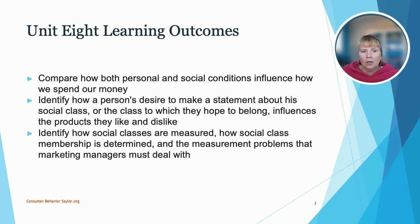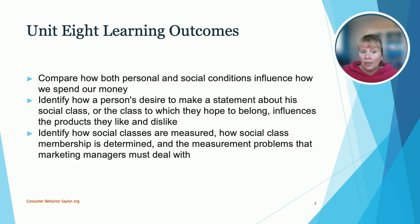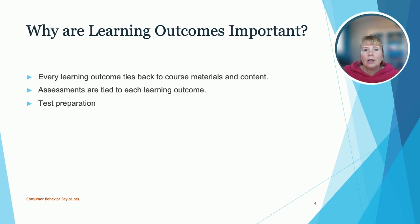Here are the Unit 8 learning outcomes. We have: compare how both personal and social conditions influence how we spend our money; identify how a person's desire to make a statement about his social class or the class to which they hope to belong influences the products they like and dislike; identify how social classes are measured, how social class membership is determined, and the measurement problems that marketing managers must deal with. Every learning outcome ties back to your course materials and content, including your test preparation and assessments.